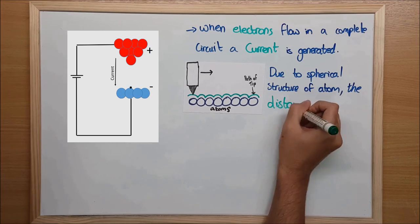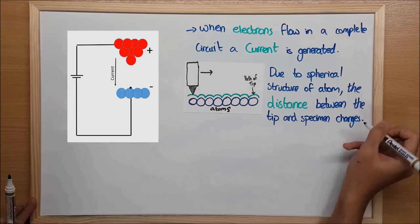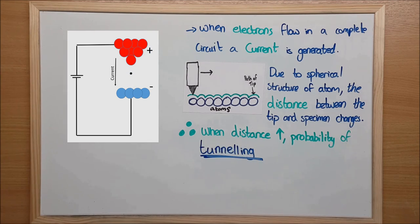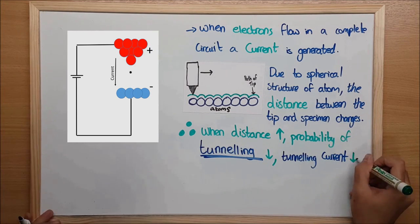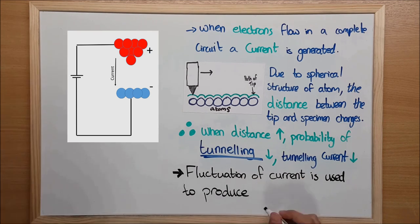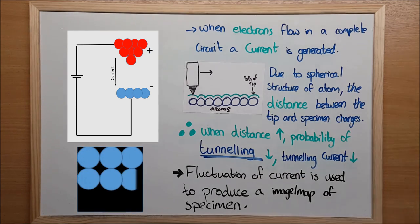Due to the spherical structure of an atom, the distance between the tip and the specimen continuously changes. The larger the distance between them, the less electrons that can tunnel from the tip to the specimen. Therefore, a lower tunneling current would be produced. It then uses this fluctuating tunneling current to produce a map of the specimen.